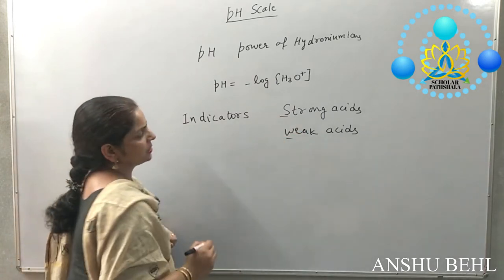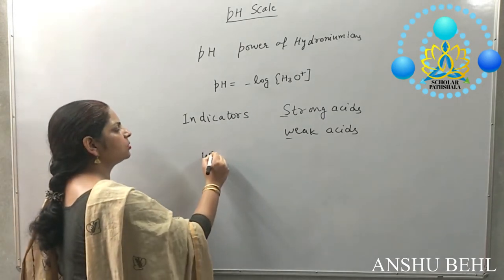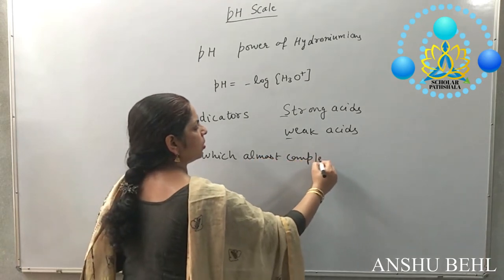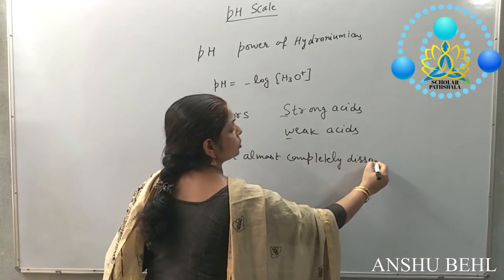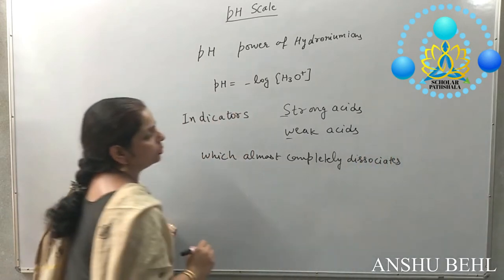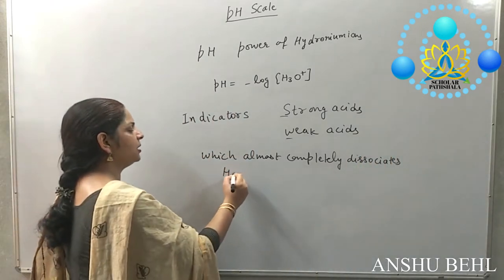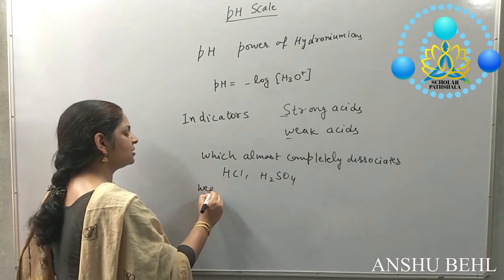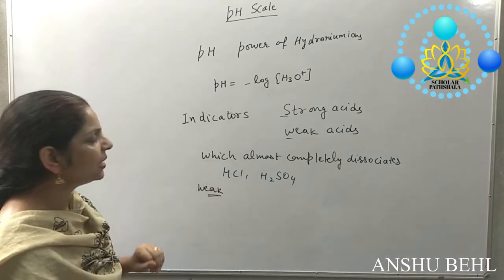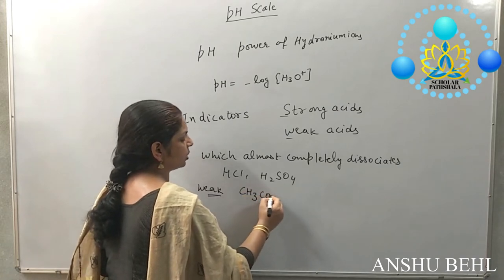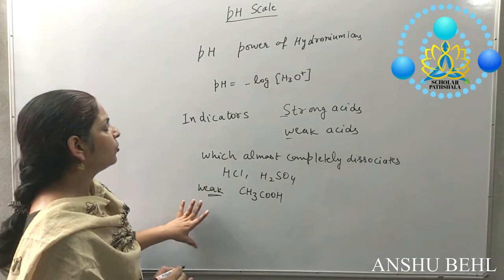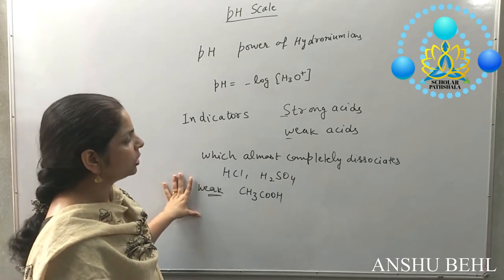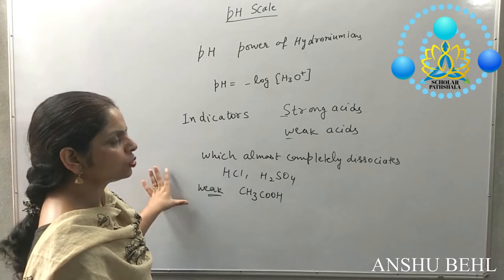Strong acids are those which completely dissociate in aqueous solution, like HCl and H2SO4. Weak acids are substances which dissociate less than 30% in aqueous solution, like acetic acid. The pH scale gives you a wide range by which we can distinguish between strong and weak acids and strong and weak bases.